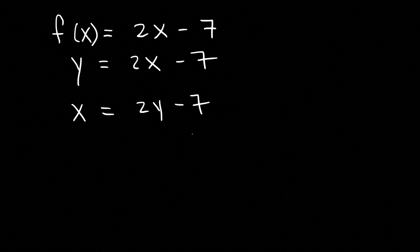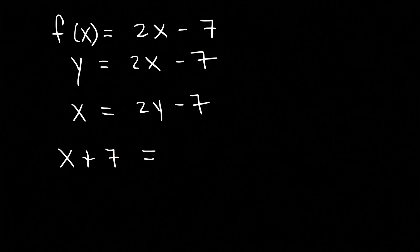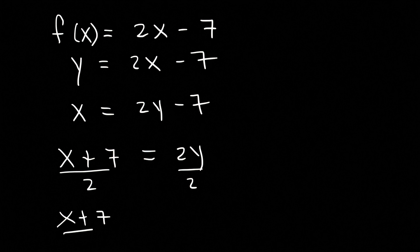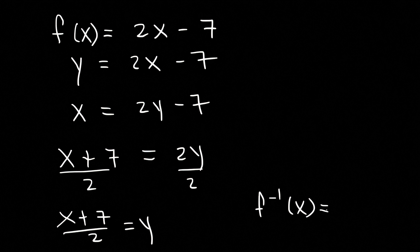So to do that, let's add 7 to both sides. So we're going to have x plus 7 is equal to 2y. And to isolate y, now we need to divide both sides by 2. So x plus 7 divided by 2 is equal to y.